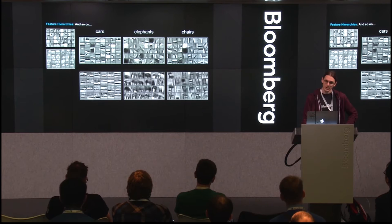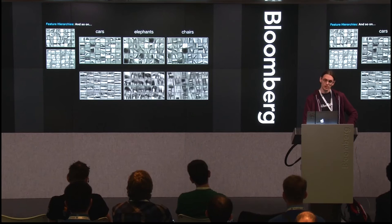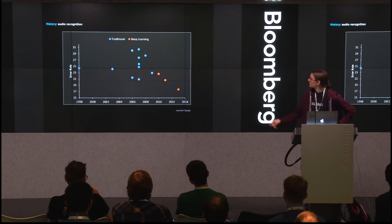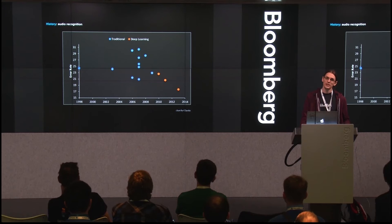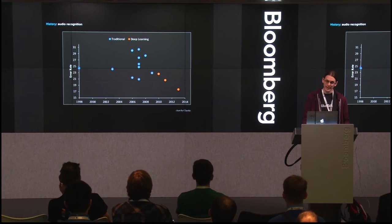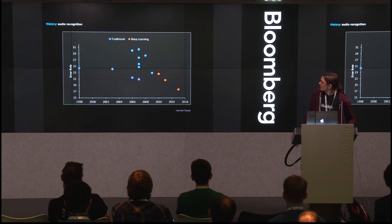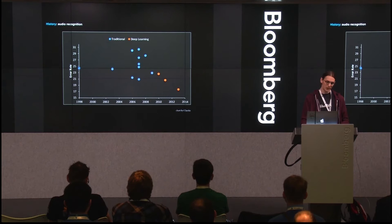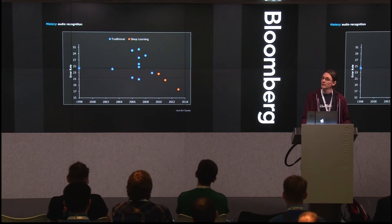For science and industry, deep learning's impact is most clearly seen in competition results. For audio, around 2009 the first deep learning model appeared in competitions — immediately reducing error rates — and since then it has been only deep learning models reducing error further. This caused the audio industry to adopt these models. By 2012, Google adopted deep learning in Android speech search, and Siri does the same. Skype has been using it for instant translation between languages.